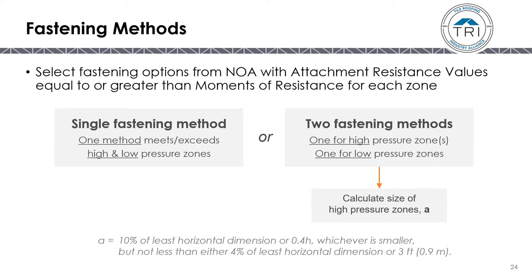Determine the moment of resistance for each zone by multiplying the pressure from the tables by the aerodynamic multiplier from the tile NOA, then subtracting the moment due to gravity from the NOA. Select fastening options from the tile NOA with attachment resistance values equal to or greater than the moments of resistance for each zone. A single fastening method can be used for the entire roof, or multiple fastening methods can be used for different zones. If using multiple fastening methods, calculate zone size using dimension A: 10% of the least horizontal dimension or 0.4 times the height, whichever is smaller, but not less than 4% of the least horizontal dimension or 3 feet.